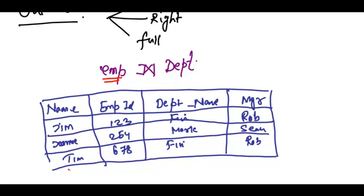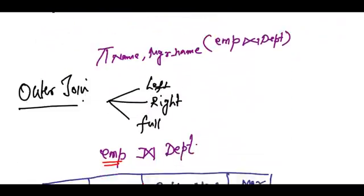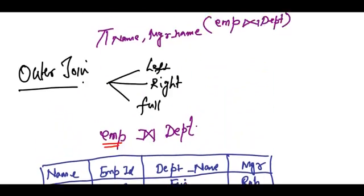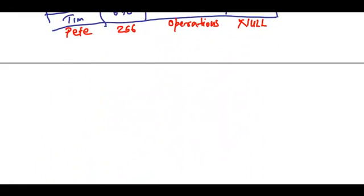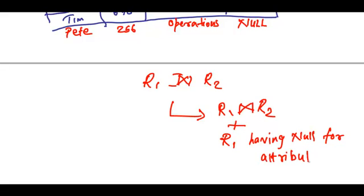In my table I would have employee ID 256, operations, and obviously we don't know his manager, so these values are made null. This is the concept of left outer join. If I talk about r1 left outer join r2, then it would have r1 natural join r2 plus tuples in r1 having null values for attributes in r2.